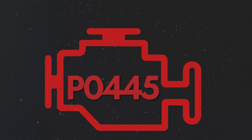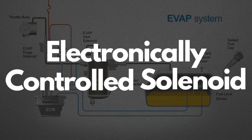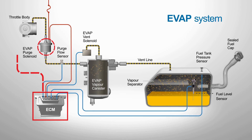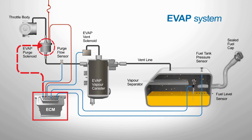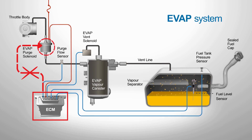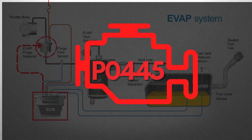Now let's look at why P0445 gets triggered. The purge valve is an electrically controlled solenoid, and it's the PCM's job to tell it exactly when to open and close so those trapped fuel vapors can be sent into the engine at the right time. But if something goes wrong, the PCM loses control over the purge valve, and that's when it throws the P0445 trouble code.